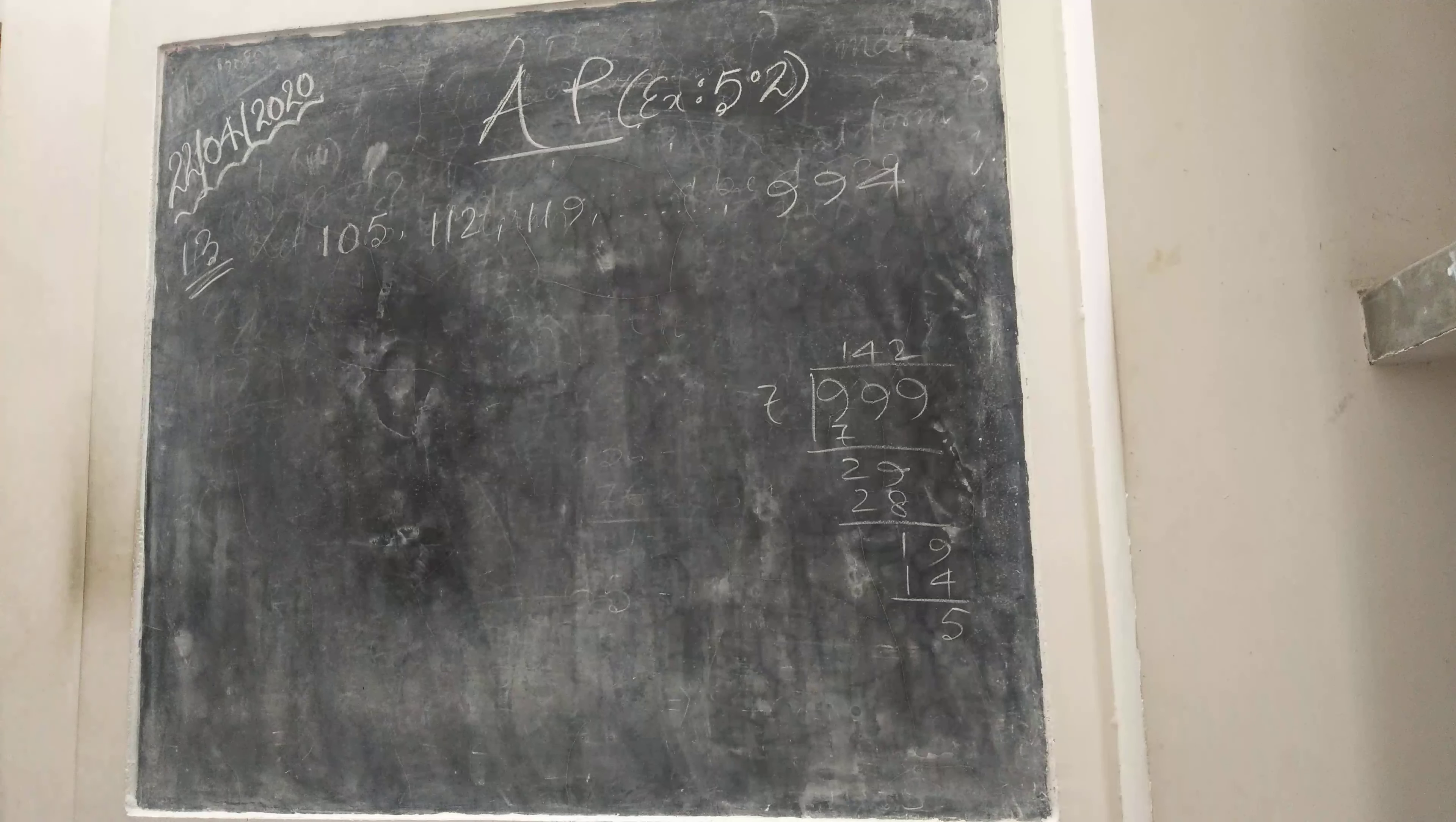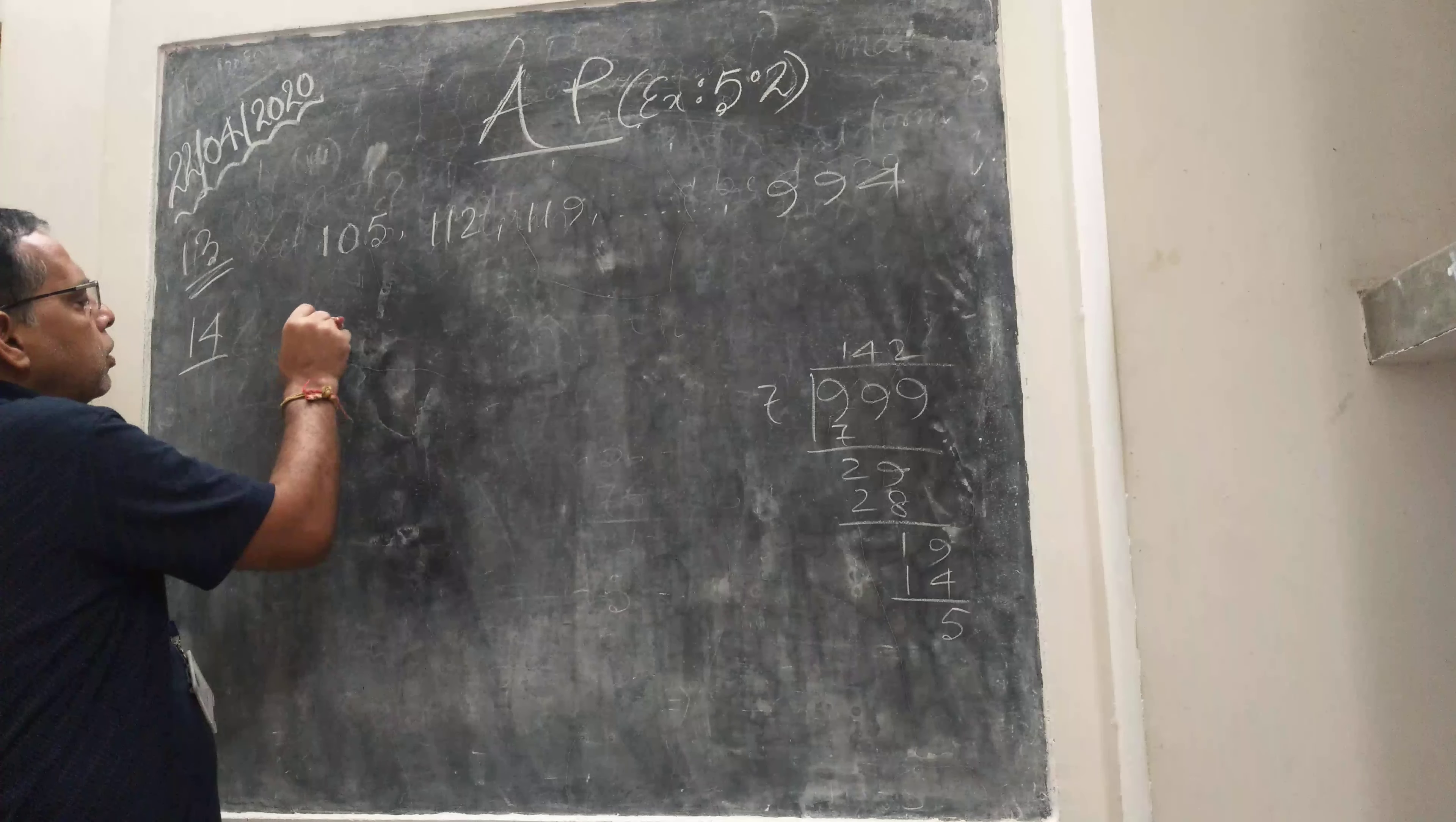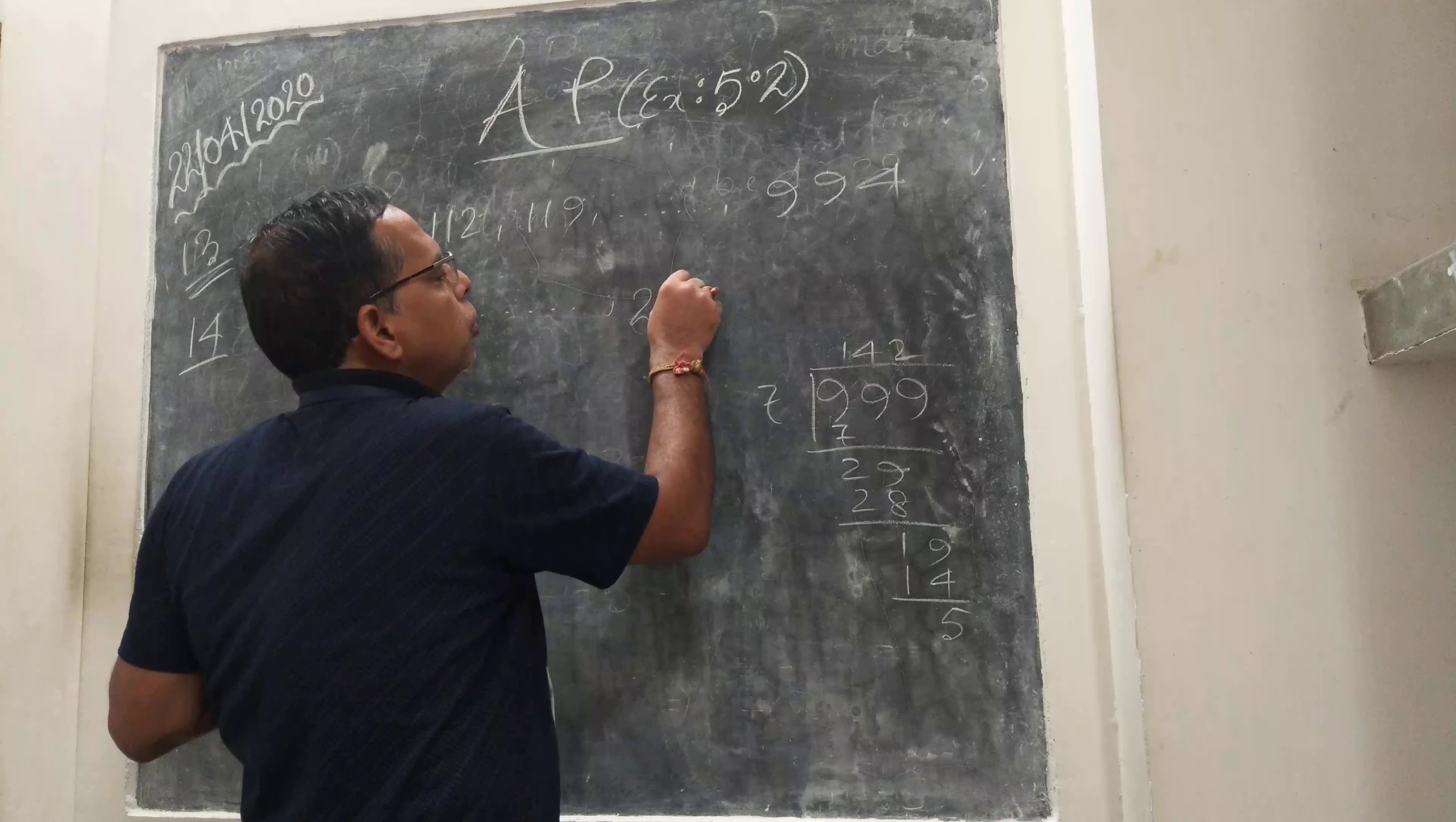Question 14 is also the same. Question 14 is how many multiples of 4 lie between 10 and 250. Here I have already fixed 10 and 250. So first one is 12, then 16. Now 250 is definitely not divisible by 4. So 248. Same process you can take out 248.